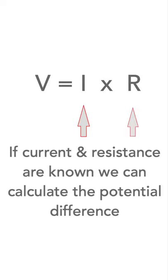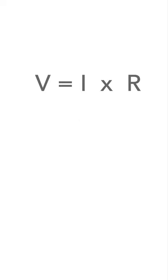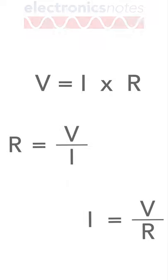So if we know the current and resistance, we can calculate the potential difference. We can easily manipulate the equation to give R equals V upon I, and I equals V upon R.